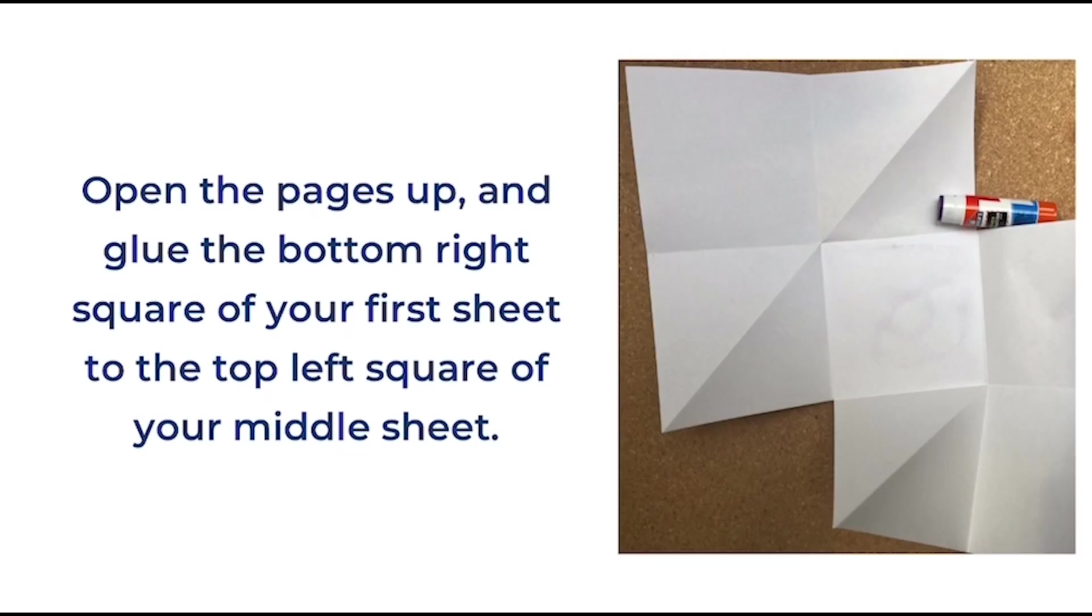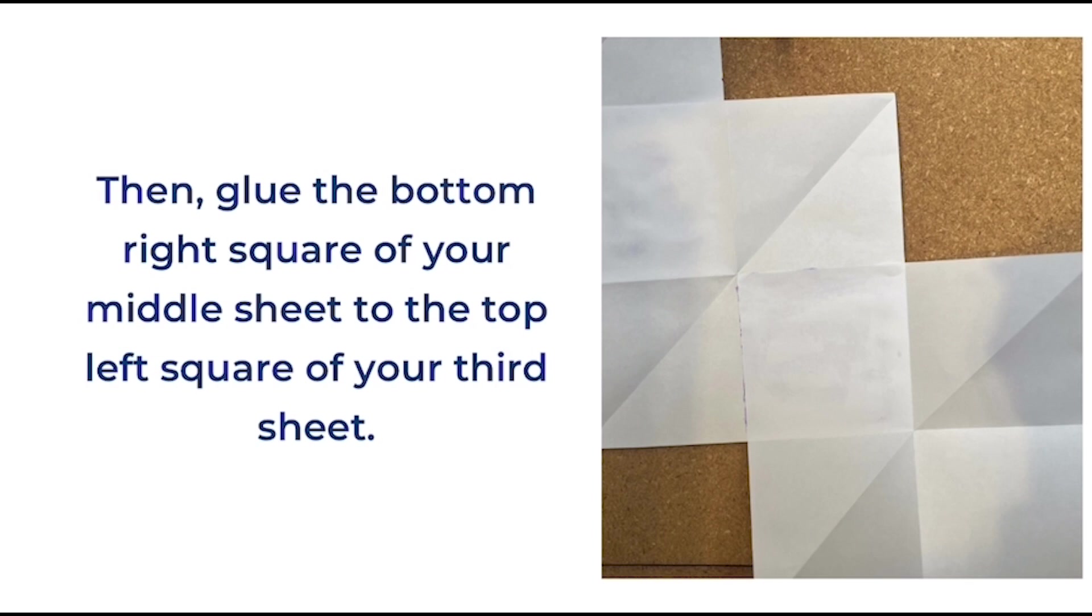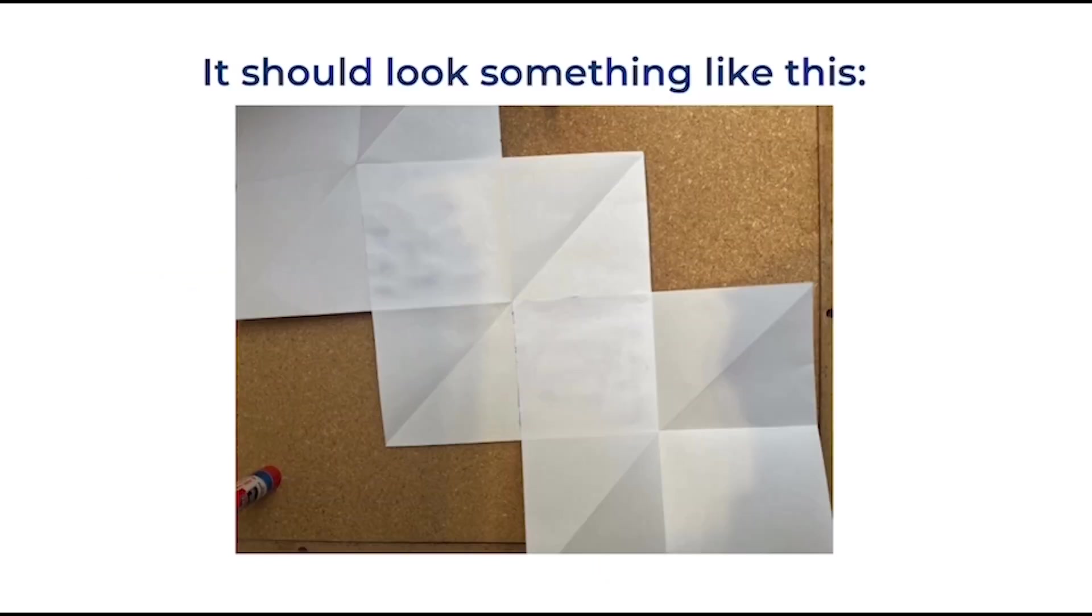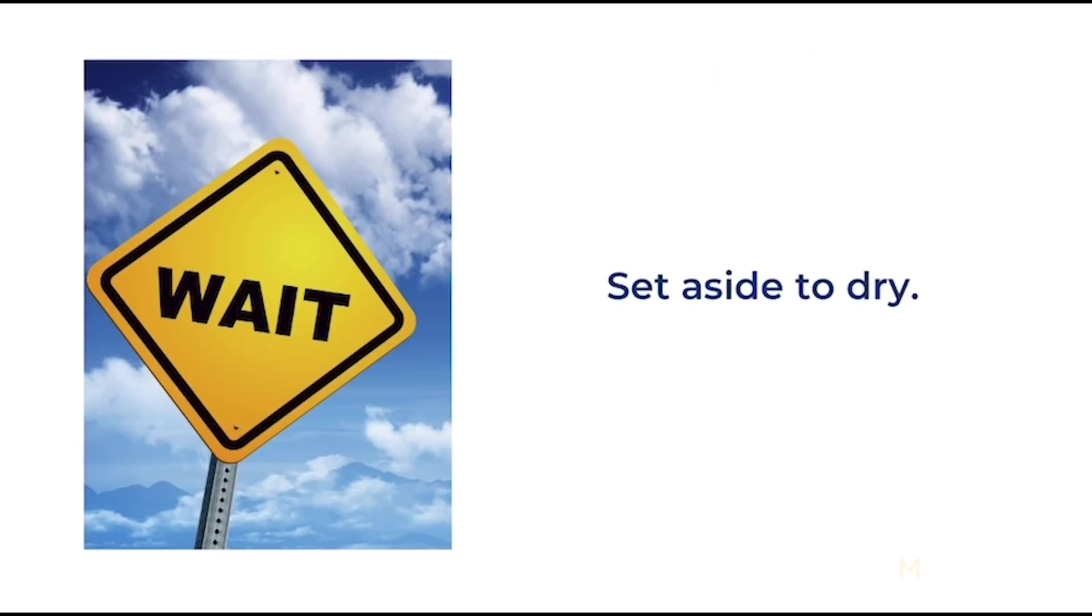Open the pages up and glue the bottom right square of your first sheet to the top left square of your middle sheet. Then, glue the bottom right square of your middle sheet to the top left square of your third sheet. It should look something like this when you're done. Set it aside to dry.